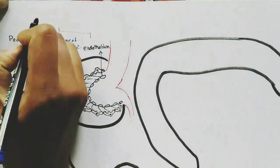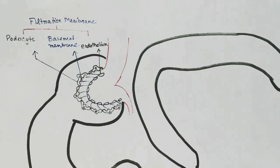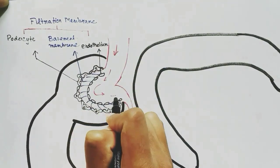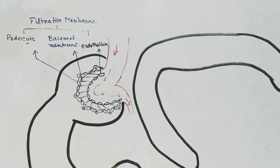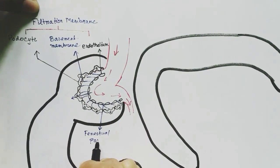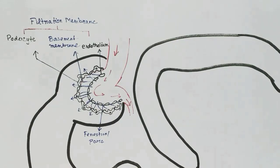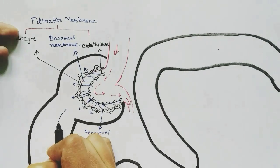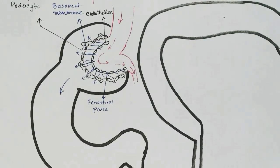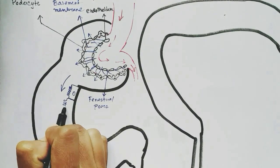The blood gets filtered — blood cells, white blood cells, and large proteins cannot cross the membrane. Smaller substances cross through the pores, slits, and fenestra present in the membrane. After filtration, the filtrate comes into the proximal convoluted tubule where reabsorption of substances like glucose, amino acids, etc. occurs. Cuboidal cells are present here with lots of microvilli.